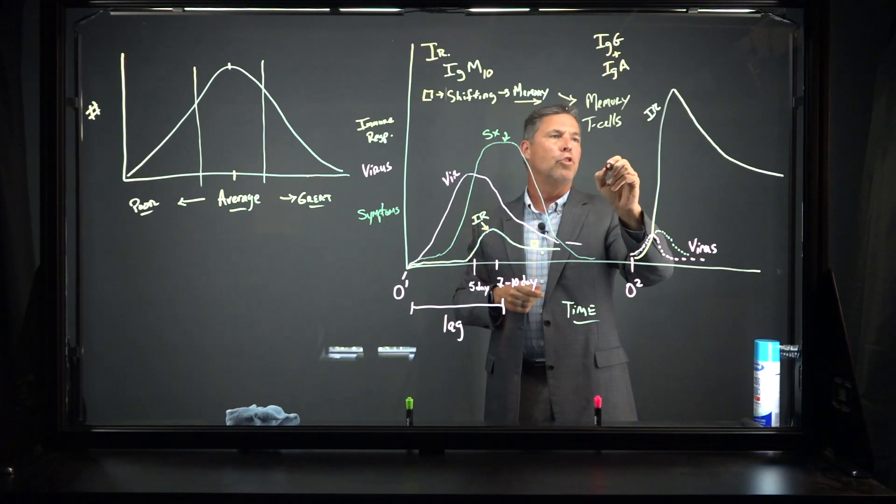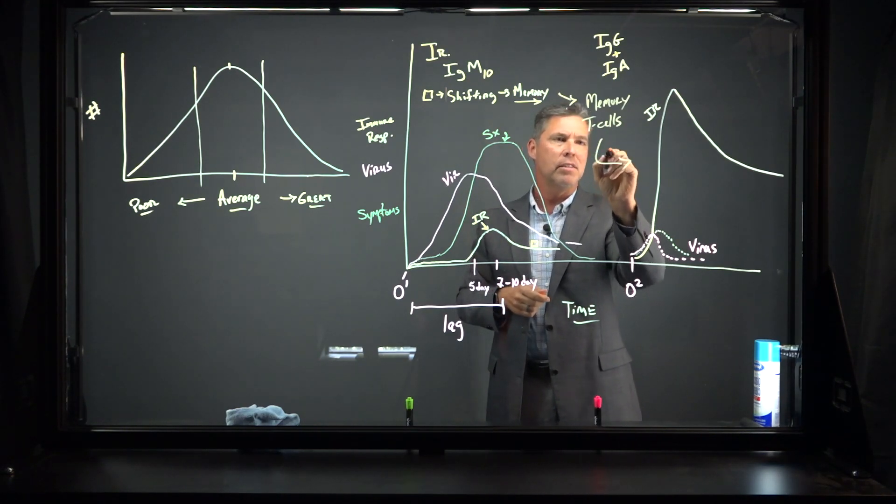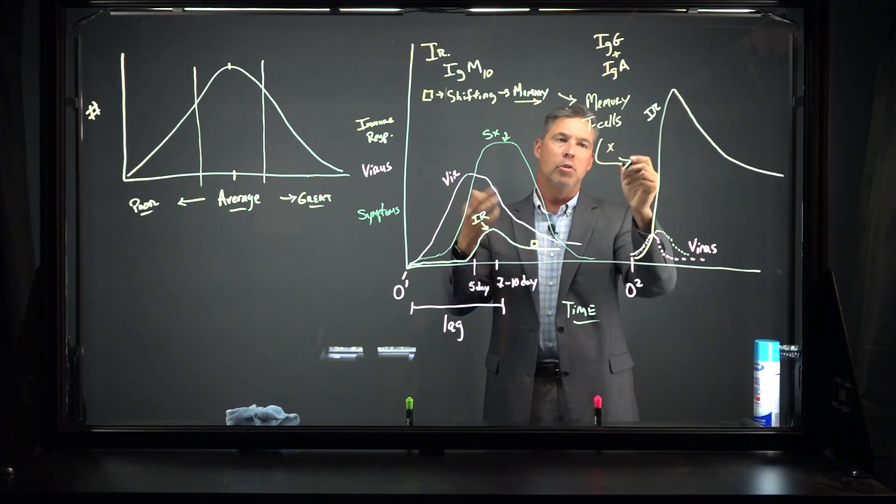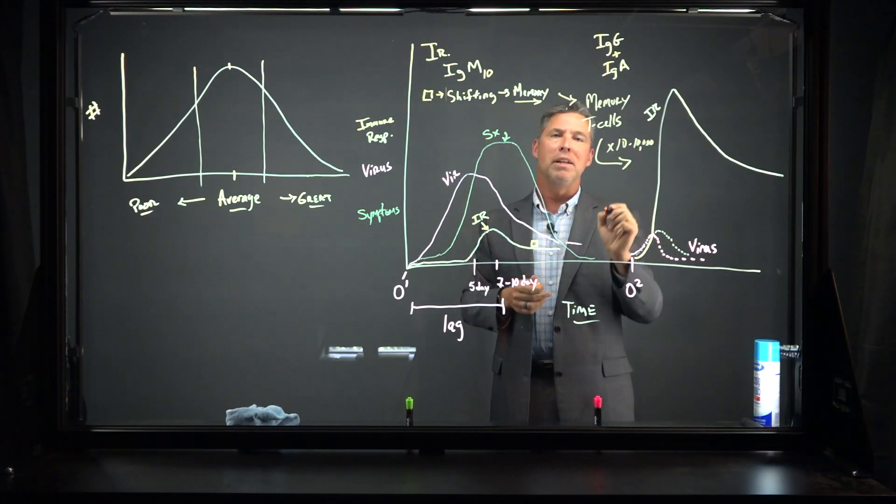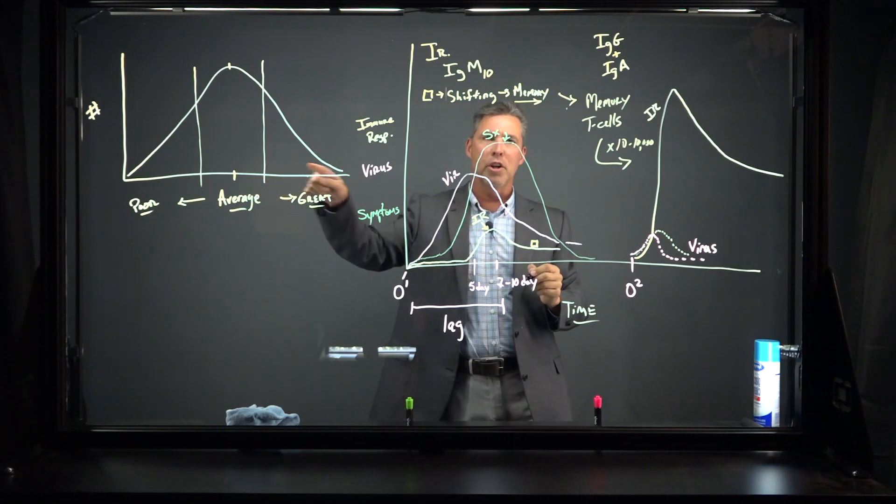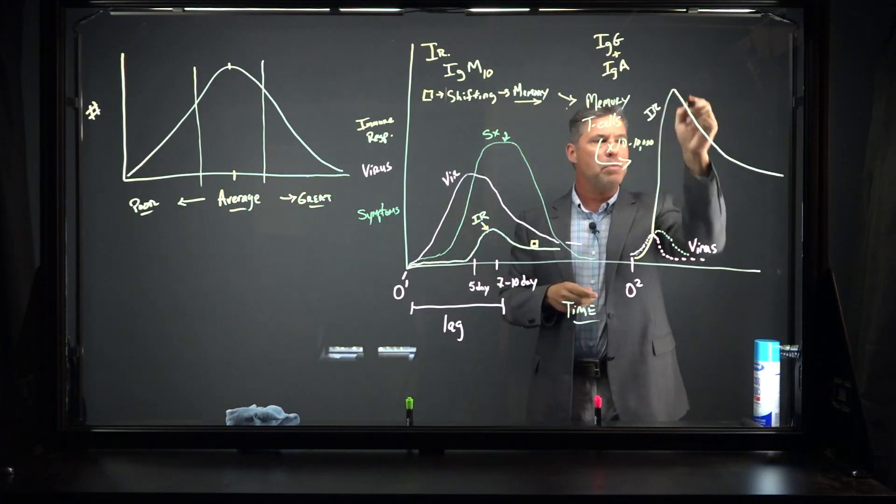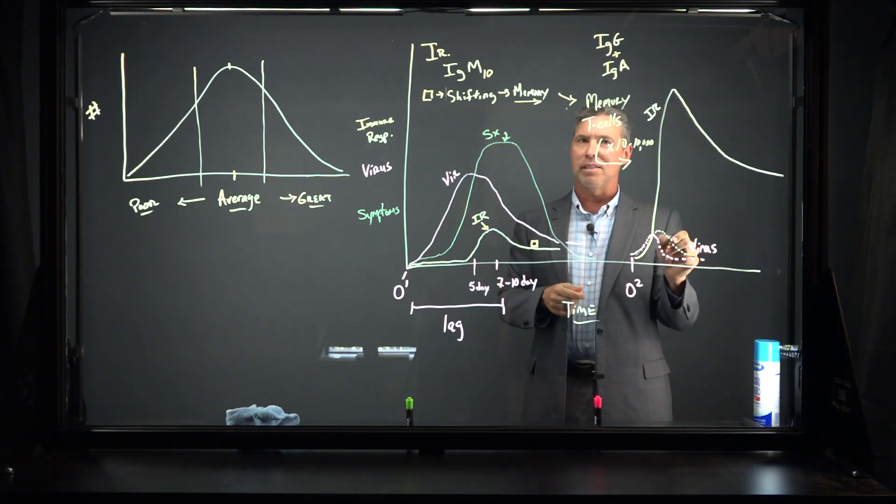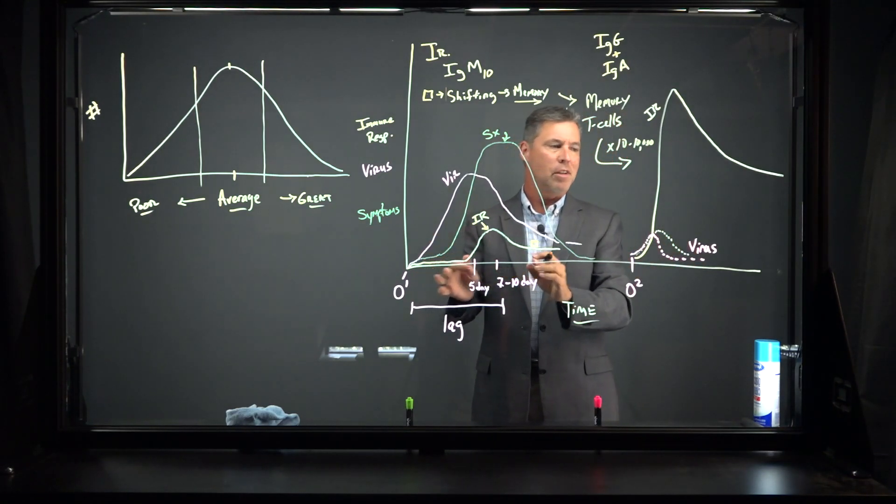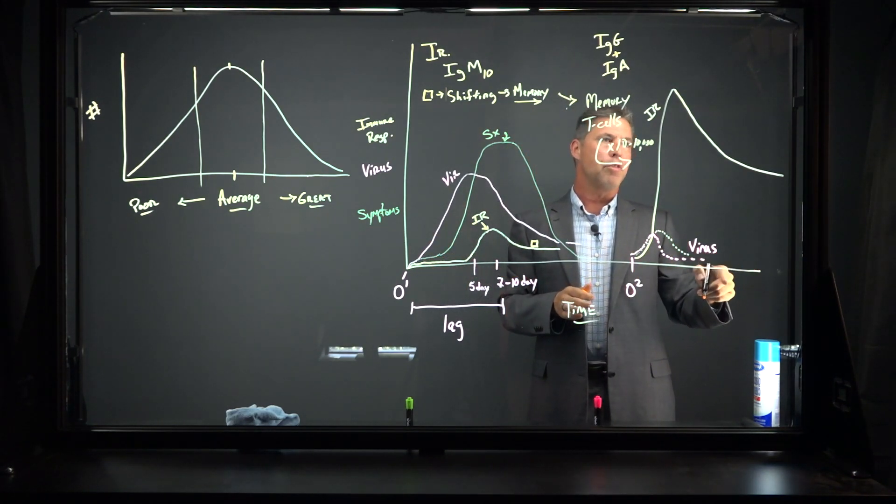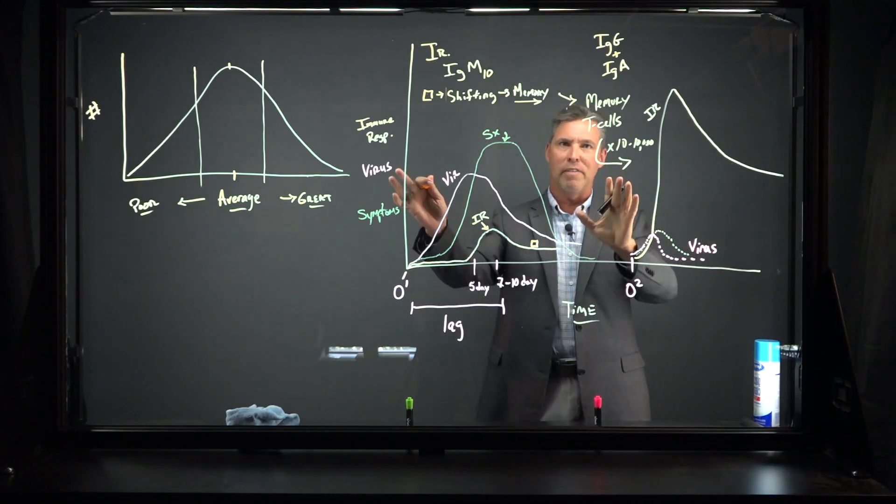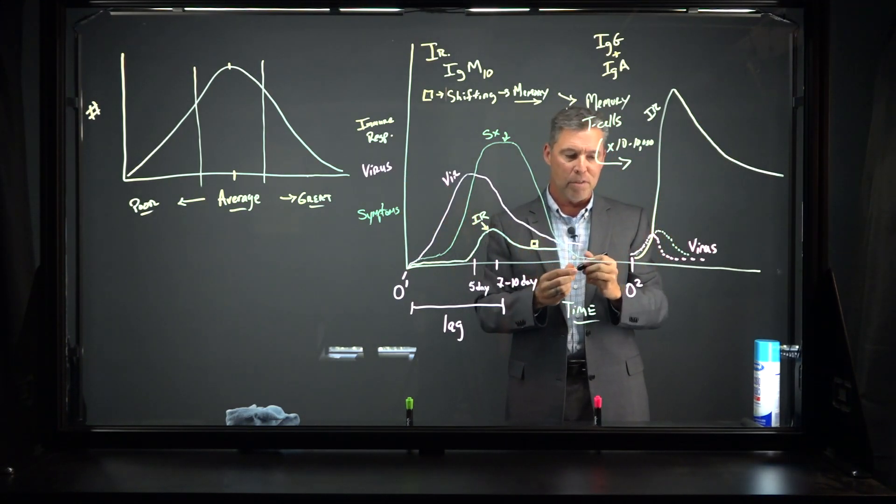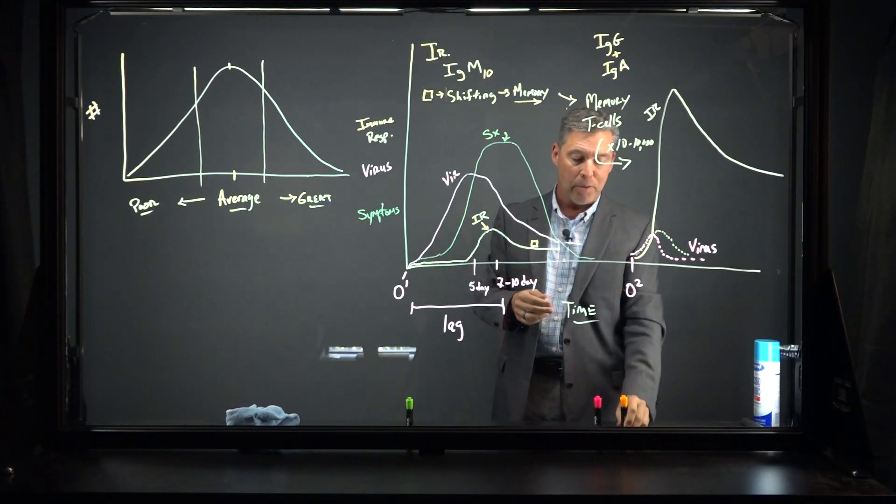And then the final thing that's made here, which is really important, is memory T cells. And memory T cells will drive this process times, who knows, 10 to 10,000. Depends on your response. Depends on where you are over here in the bell curve. So the response becomes much, much larger the second time you see something than it was the first time. If you were to ever see anything the third time, the antibody response would actually be off the chart. I wouldn't be able to draw it on the same scale because of the way that the body responds.